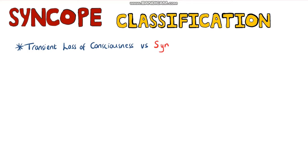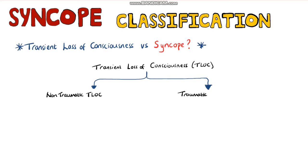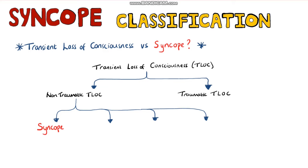What's the difference between a transient loss of consciousness and syncope? Syncope is a form of transient loss of consciousness, which can be divided into loss of consciousness due to head trauma or non-traumatic causes, under which comes syncope. Other non-traumatic causes of transient loss of consciousness include epileptic seizures, psychogenic causes, and rare causes like subclavian steal syndrome.